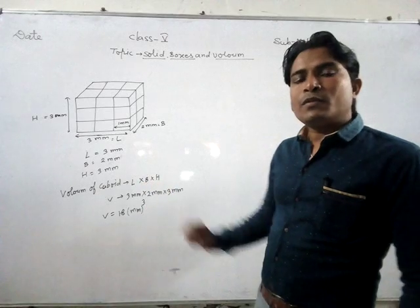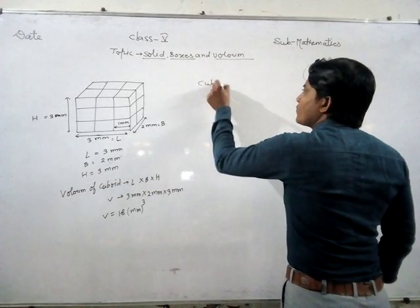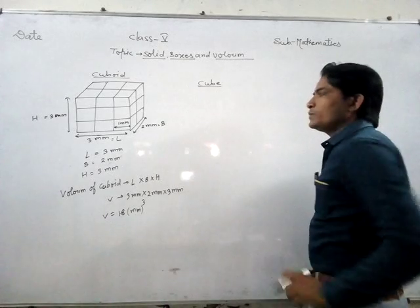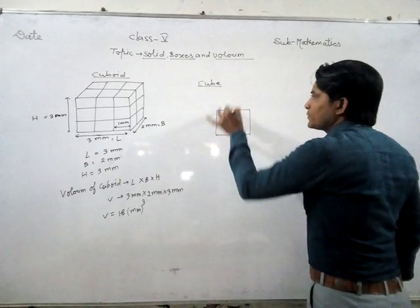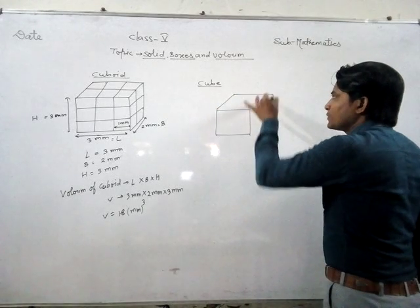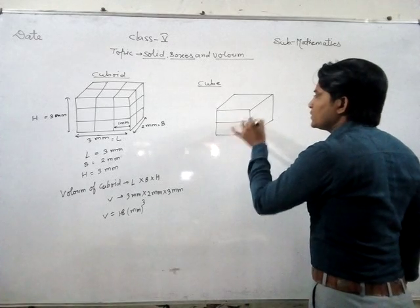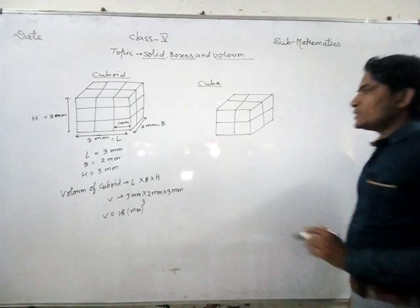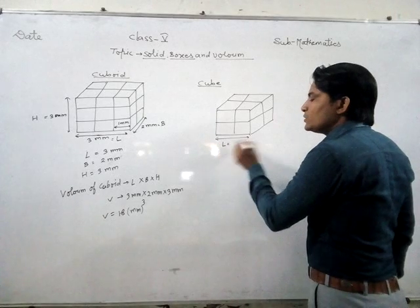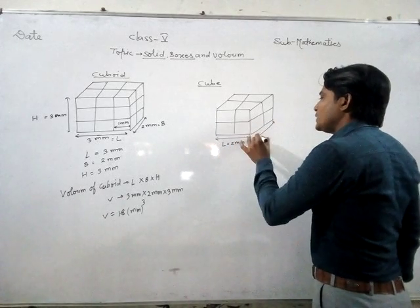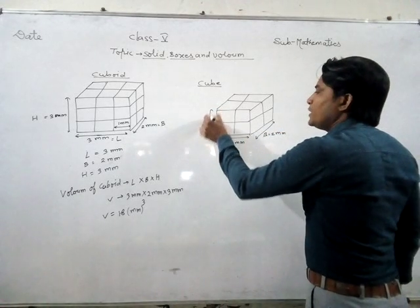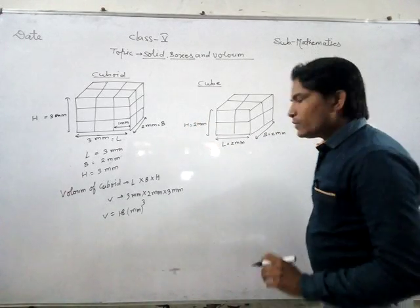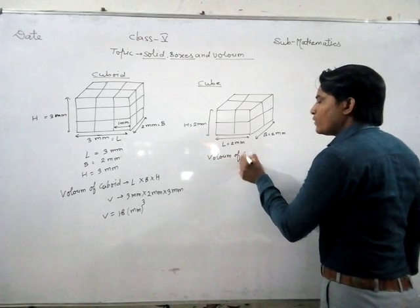So this is the concept of cuboid. Similarly, now we use cube. Suppose this shape — I think all its sides are equal. The length L is equal to 2 mm, breadth is also equal to 2 mm, and height is also equal to 2 mm. So length, breadth and height are all equal, and we can use the volume of cube formula.